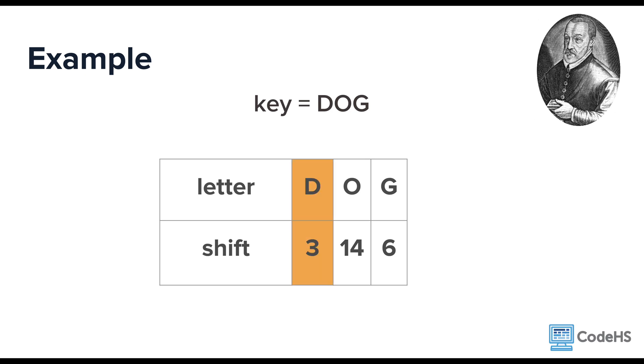The first letter of the plain text would be encrypted using a shift of 3. The second letter would be encrypted using a shift of 14, and the third letter would be encrypted using a shift of 6. Then it would just start over and continue this pattern of 3, 14, 6 for the entire message.